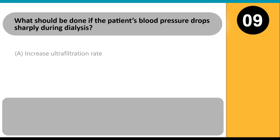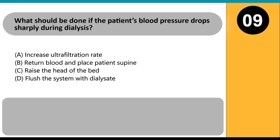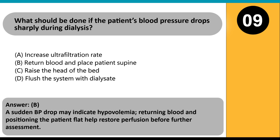What should be done if the patient's blood pressure drops sharply during dialysis? A. Increase ultrafiltration rate. B. Return blood and place patient supine. C. Raise the head of the bed. D. Flush the system with dialysate. Answer B. A sudden BP drop may indicate hypovolemia; returning blood and positioning the patient flat help restore perfusion before further assessment.